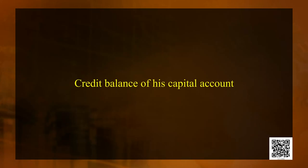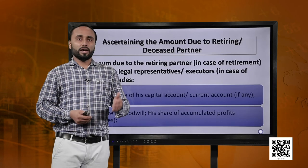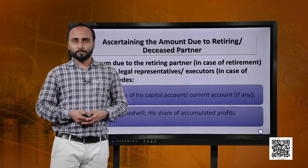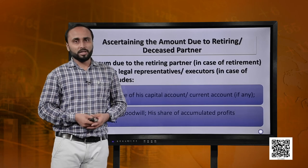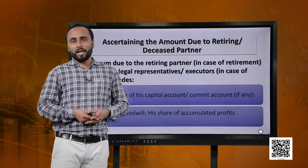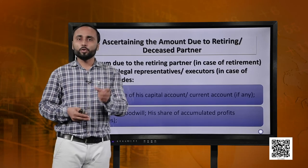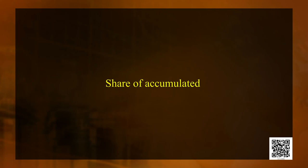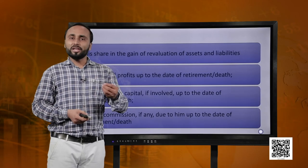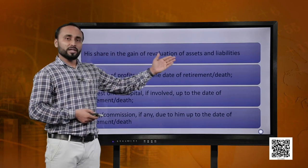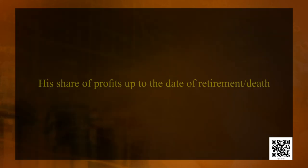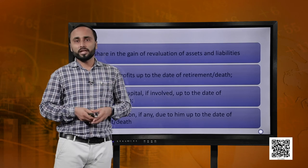The first thing the partner is entitled to is the balance in his capital or current account — if it is a credit balance, it will be given to the partner. The next thing is his share in the goodwill. In this chapter, the retiring partner will be given his share in the newly valued goodwill. Apart from that, the partner is entitled to his share in the accumulated profits, and his share in the gain on revaluation of assets and liabilities.